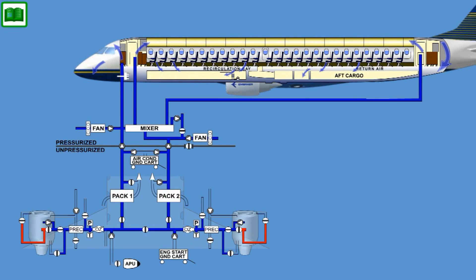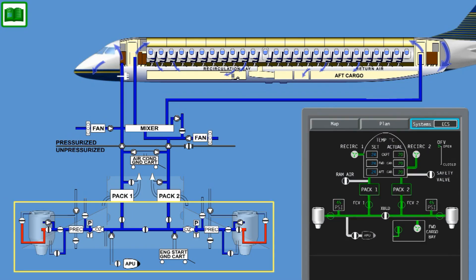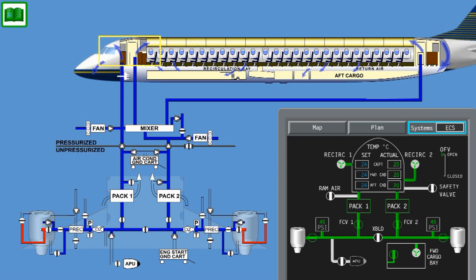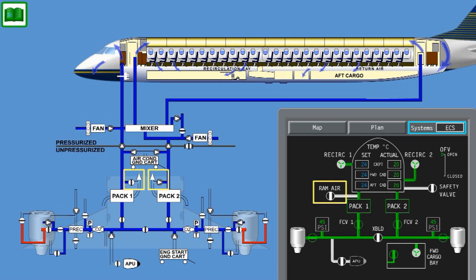The Environmental Control System uses bleed air from the pneumatic system to provide air conditioning for the cockpit and cabin, filtered air recirculation, conditioned air supply for gaspers, and fan air cooling for avionics located in the electronic bays. Additionally, an emergency ram air ventilation system is provided for cockpit smoke removal. An optional cargo bay ventilation system provides adequate airflow to the forward cargo compartment.